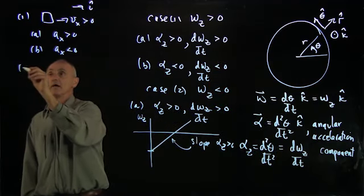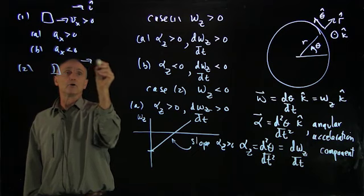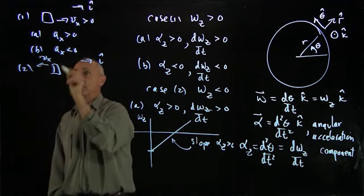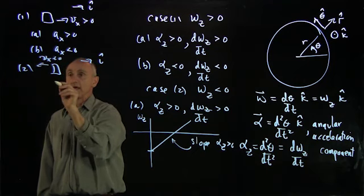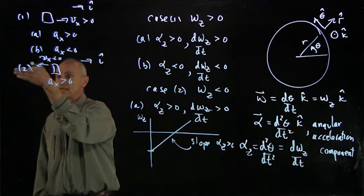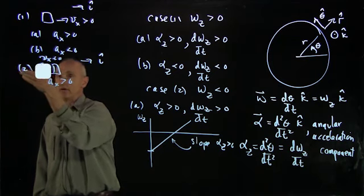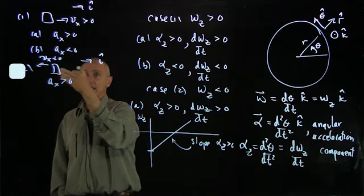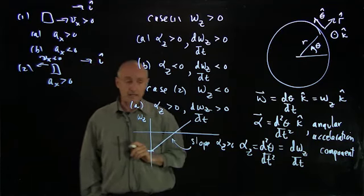For our linear case, this corresponds to, again, with î, our object moving to the left, v_x negative. And if a_x is positive, it brakes in this direction, which means it's slowing down. And then eventually, if a_x stays positive, it continues in that direction.